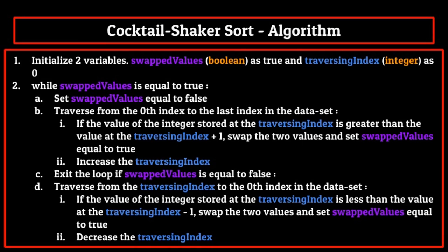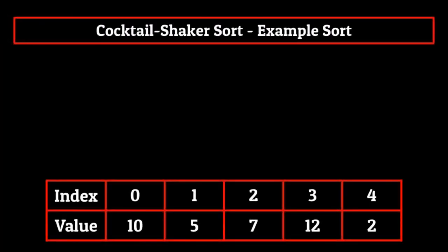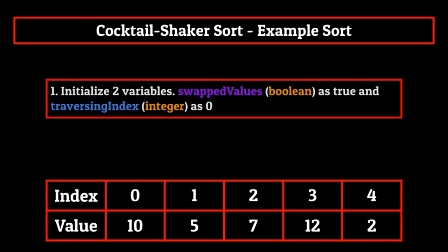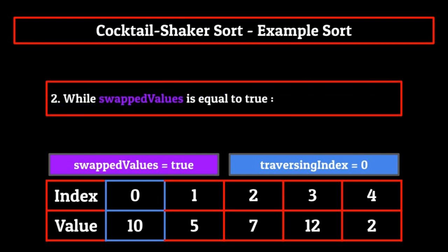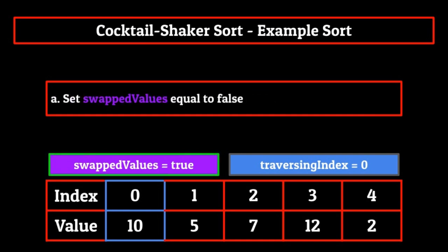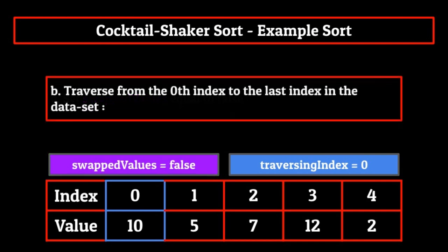To see this algorithm in action, let's pull up the same list of five elements that we had last time for the bubble sorting algorithm and run a cocktail shaker sort on it. So we start off with step one from our pseudocode, which is to initialize two variables: swap values as true and traversing index as zero. Then we go on to step two, a while statement that checks while swap values is equal to true. We literally just initialized swap values as true, so of course we're going to enter the loop. The first thing we do is immediately set swap values equal to false. Up next, we start from the zeroth index and traverse to the last index in the dataset using our traversing index as a stepper.